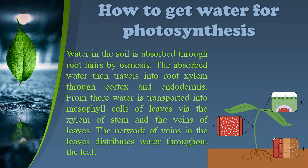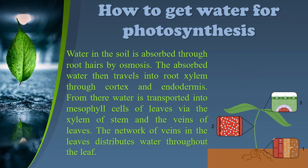How to get water for photosynthesis. Water in the soil is absorbed through root hairs by osmosis. The absorbed water then travels into root xylem through cortex and endodermis. From there, water is transported into mesophyll cells of leaves via the xylem of the stem and the veins of the leaves. The network of veins in the leaves distributes water throughout the leaf.